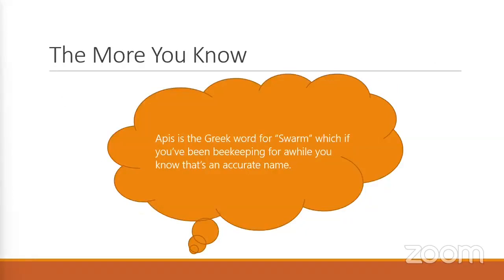Apis is the Greek word for swarm, and if you've been beekeeping for any amount of time, you know that's accurate — they love to swarm. I don't even know how many swarms we picked up last year. For those who don't know what a swarm is, it's when bees leave a hive and collect on tree branches, cars, trampolines — pretty much anywhere — in a ball of bees. They're very calm; they've got nothing to protect at that point. They're looking for a new home, and we like those in the beekeeping world because of the freebies — and bees can be quite pricey.